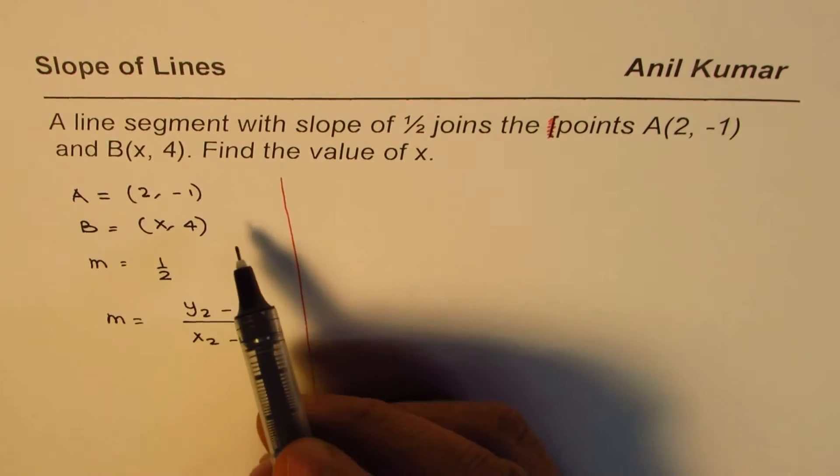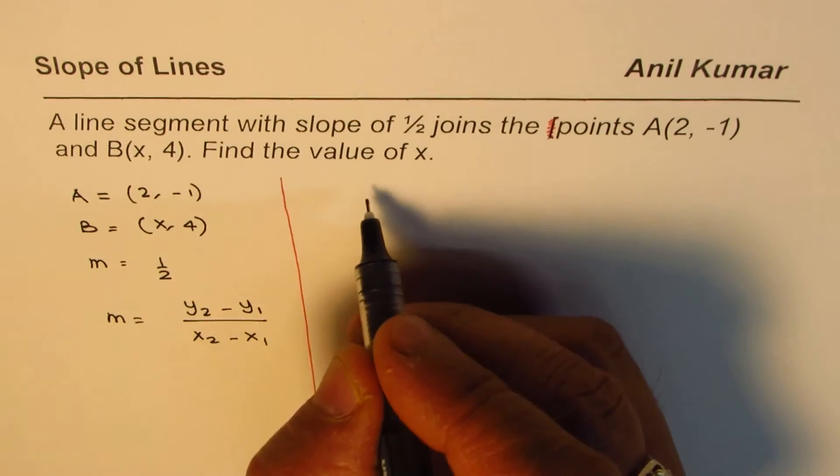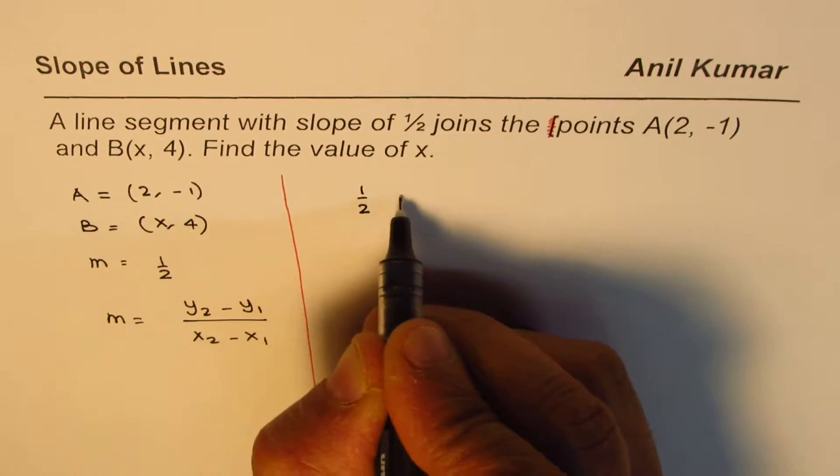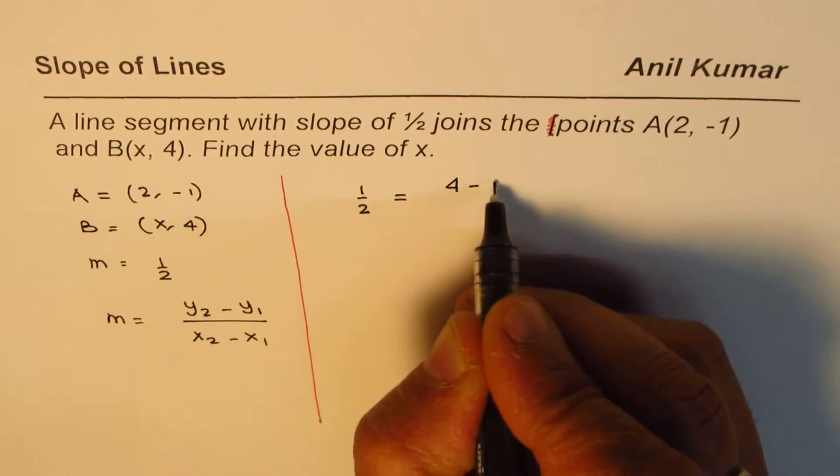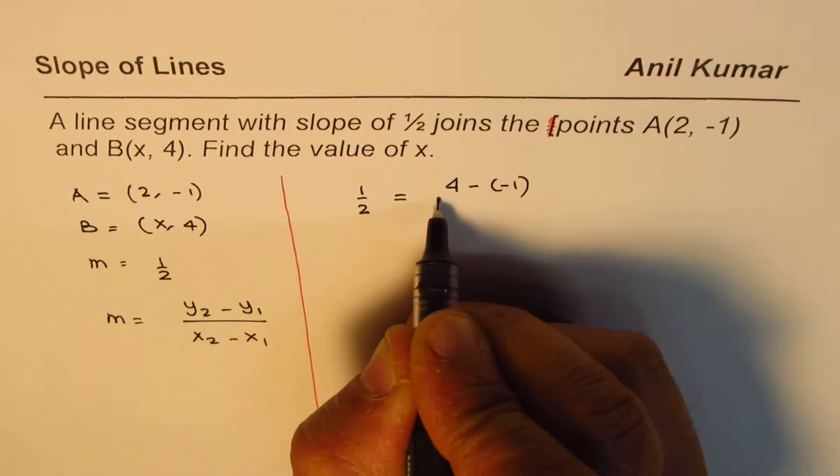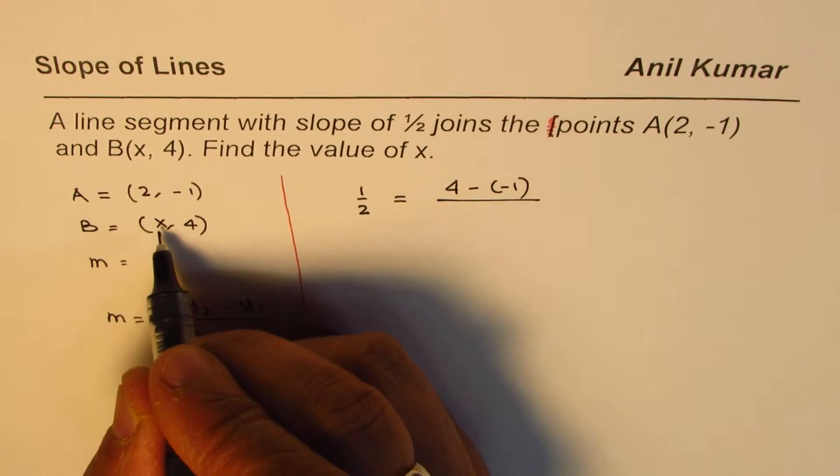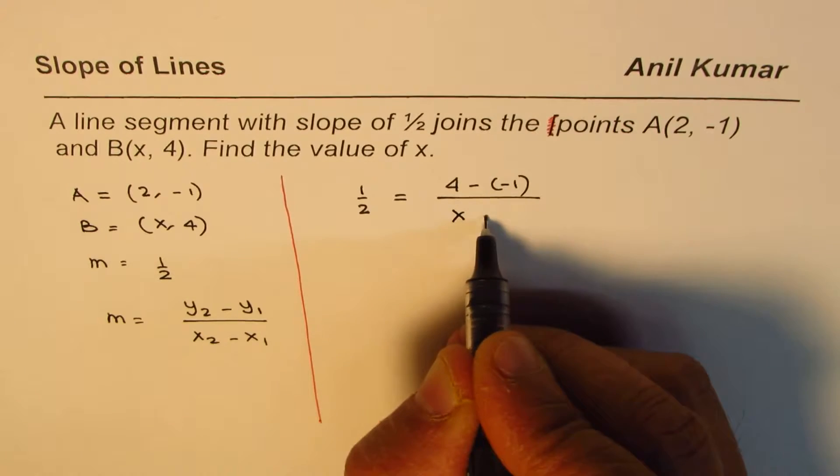So let's substitute the values. Slope is 1/2. We'll write 1/2 equals (4 - (-1)), which is the difference in y values, divided by the difference in x values, which is (x - 2).